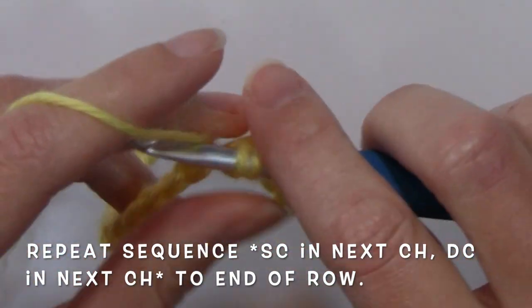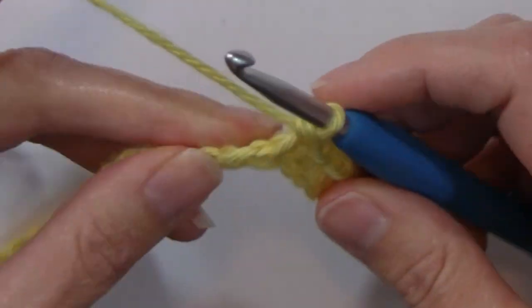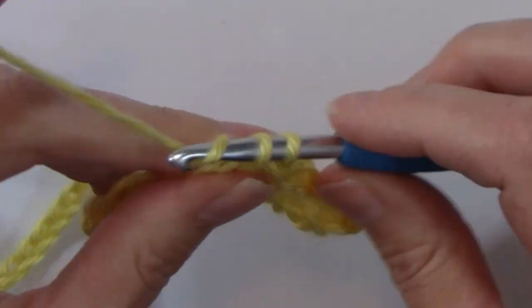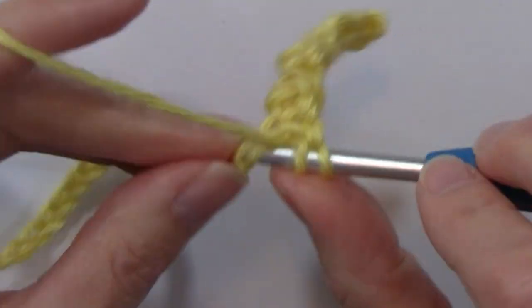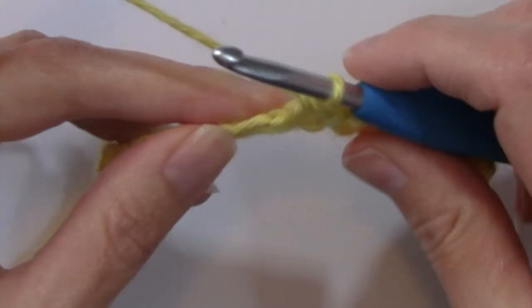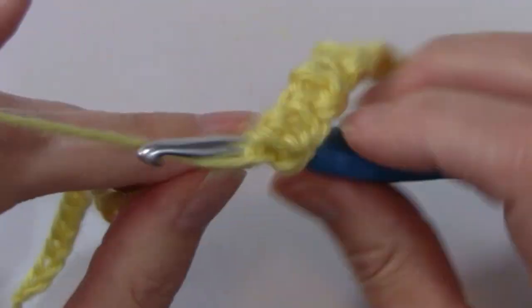And you're just going to repeat that same sequence of stitches all the way down to the end of that chain. So single crochet, double crochet, alternating those stitches through the end of this row.